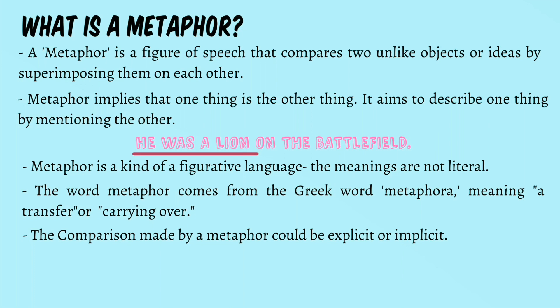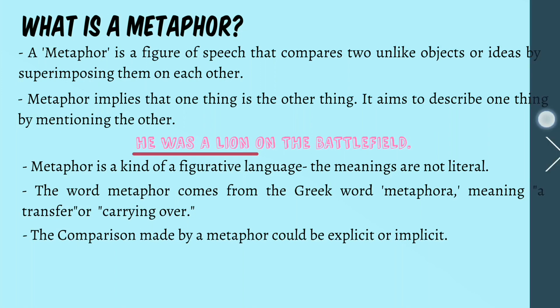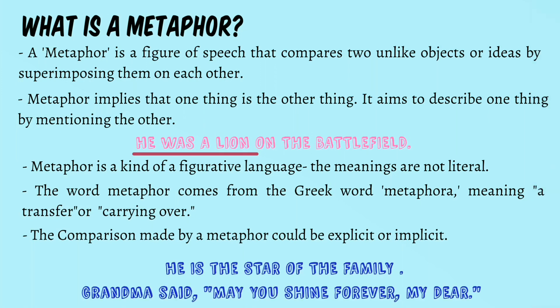The comparison made by a metaphor could be either explicit or implicit. 'He is the star of the family' — he is being compared to a star to mean he is very unique and bright among all family members. This comparison is direct or explicit. Now consider: 'Grandma said, may you shine forever, my dear.' Here, the grandma tells him to shine, and we know that a star shines — so he is being called a star in an indirect manner. This is also a metaphor, but the comparison is implicit or hidden.